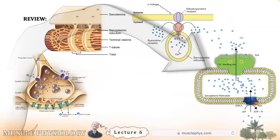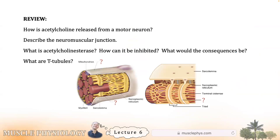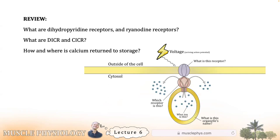Wrapping up, you should be able to work through excitation-contraction coupling from start to finish: beginning in the brain, through the nerve terminal, how acetylcholine crosses the cleft, how the signal enters the muscle, and how it causes calcium release. You should also be able to answer specific questions, label diagrams, and a few more. That's it for this lecture — see you in Lecture 7 when we get into reflex arcs.